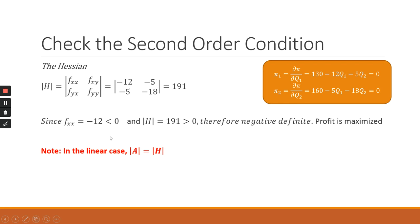An important observation from this example: when working with a linear case, the determinant of the Hessian is the same as the determinant of the A matrix. So remember that every time you work with a linear case, det(H) will equal det(A).